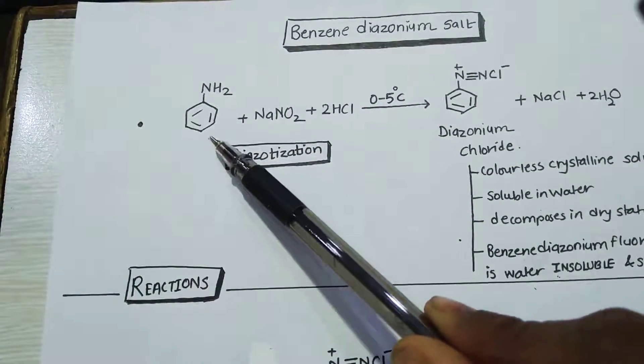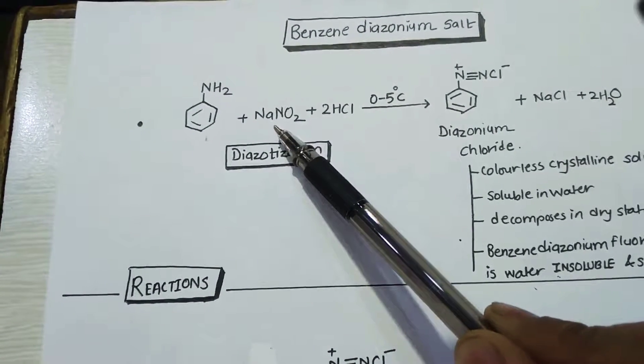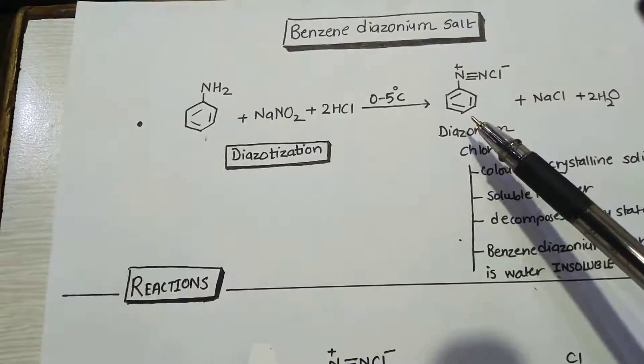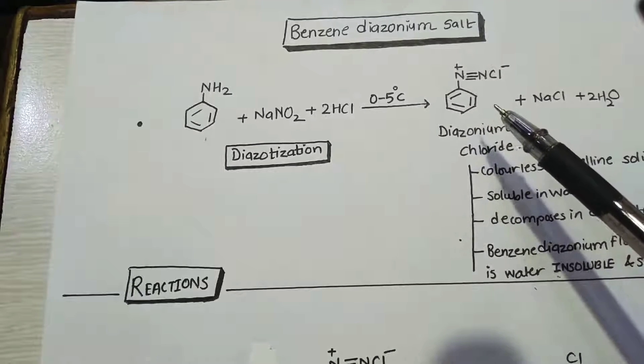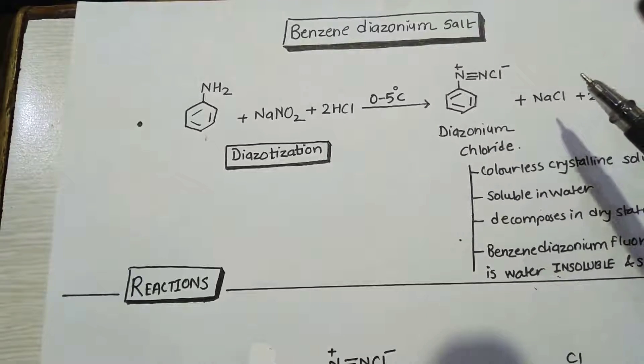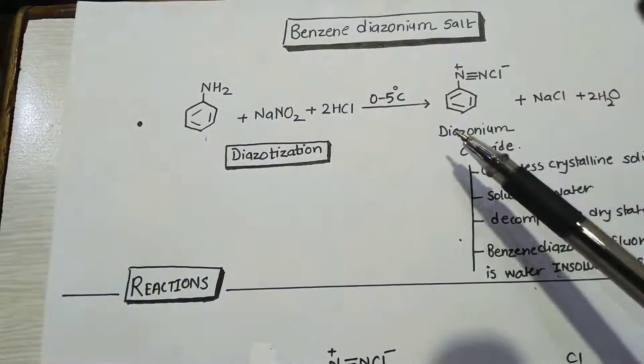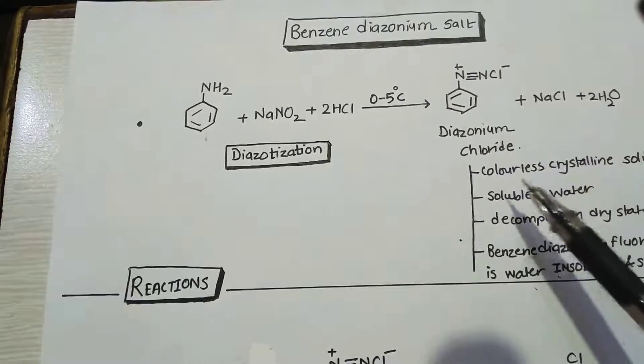If you take an alkyl amine, that is aliphatic primary amine, and if you do the reaction with NaNO2 and HCl, that will give you alkyl diazonium chloride which will be highly unstable and will decompose in aqueous medium to give you alcohol and nitrogen gas is liberated.